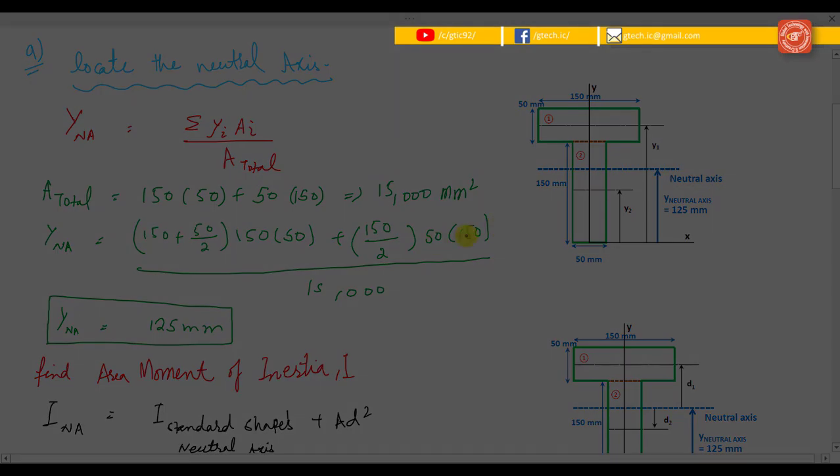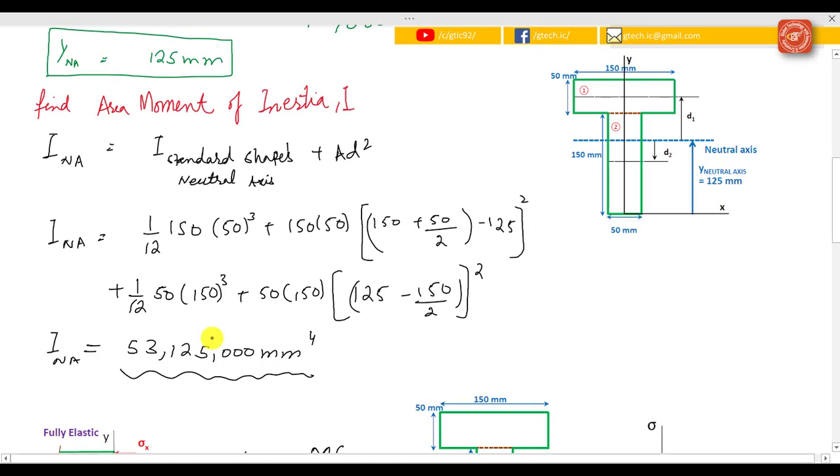For finding the moment of inertia we know that I_na equals I for standard shape neutral axis plus Ad². So the moment of inertia of this rectangle is 1/12 × 150 × 50³ plus Ad² (the area of this section, that is 150 × 50, times the distance from the neutral axis, that is d_1).